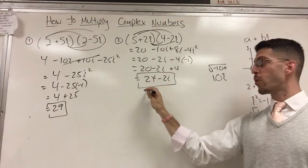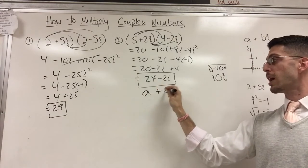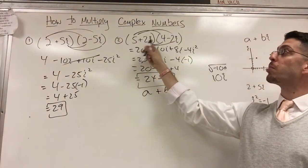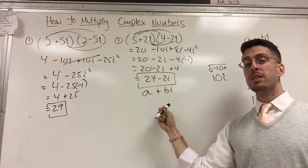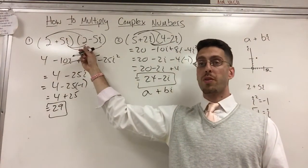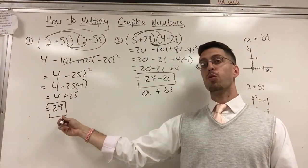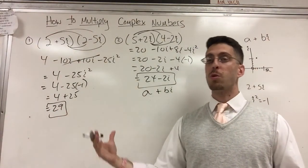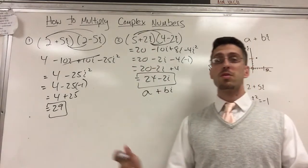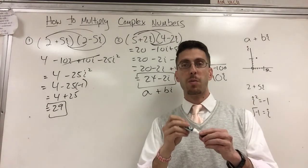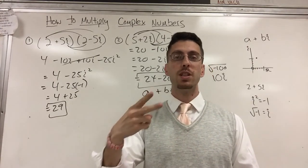20 plus 4, I can combine those. Those are like terms. Those are both real numbers. That's 24, and then the minus 2i drops down. Here my final answer stays in the form a plus bi, which is considered a complex number. So when I multiply complex numbers, I'm expecting a complex number unless it's a special version where they're conjugates, cancel out the imaginary part, and I get a real answer. Multiplying complex numbers is the same as multiplying binomials. Check that video out. It's very helpful. Thanks for watching, see ya.